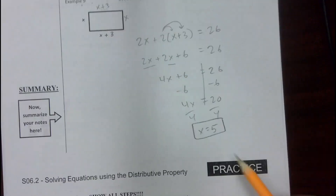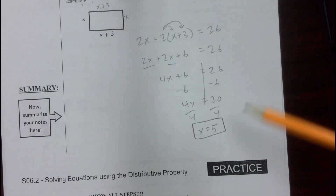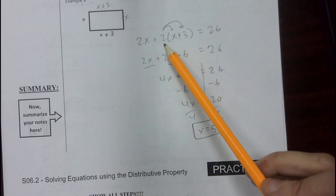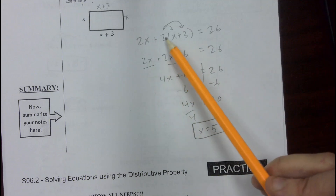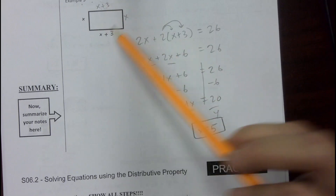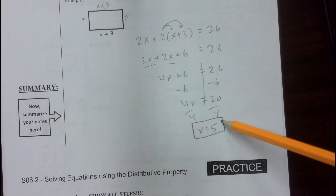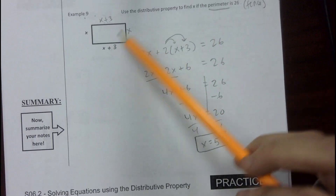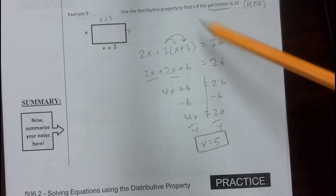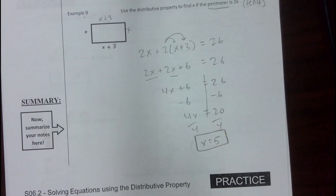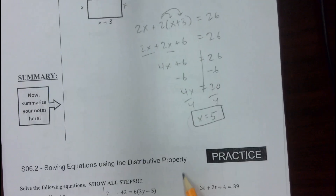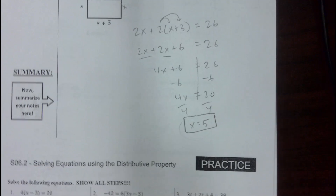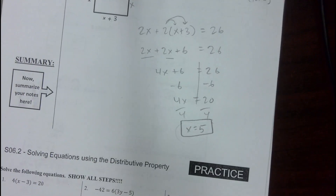We get the same answer — it's the same problem, but we're just showing you can use the distributive property to represent 2 times this quantity. The only difference is I just asked you to find x, so x equals 5 is the final answer. There are lots of steps to solving equations with the distributive property, but it's all stuff you've done before — just be careful and keep your numbers organized.